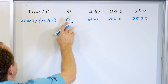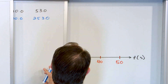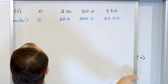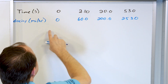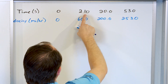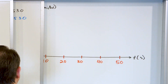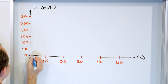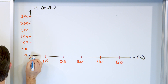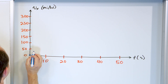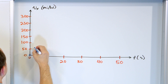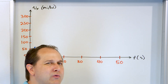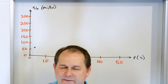At 0 seconds the velocity is 0, so the object is not moving initially — we have a point right there. The second point is at 2.1 seconds with 60 miles per hour. These numbers are a little weird, but 2.1 seconds is about here, and 60 miles per hour is a little bit above the 50 mark. This is just a sketch, so it doesn't have to be exact.